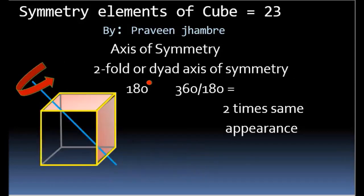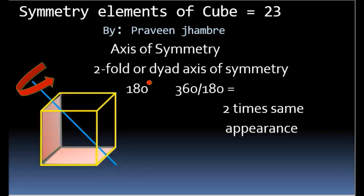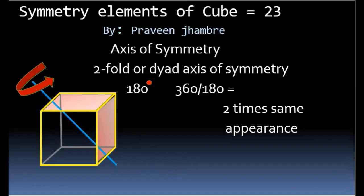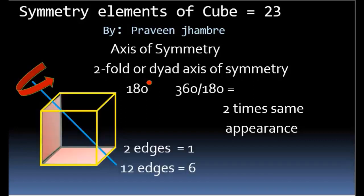Finally, we have the dyad or two-fold axis of symmetry. In this type, the imaginary axis passes through the opposite edge centers and also through the center of the cube. If the cube is rotated by an angle of 180 degrees about this axis, we get 360 divided by 180, that is two times the same appearance. Between two edges we have one two-fold axis, so between twelve edges we have six two-fold axes of symmetry.